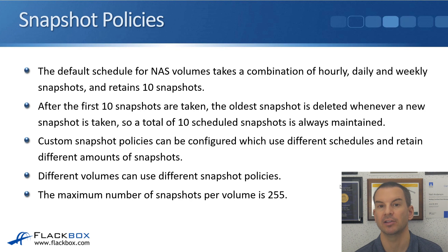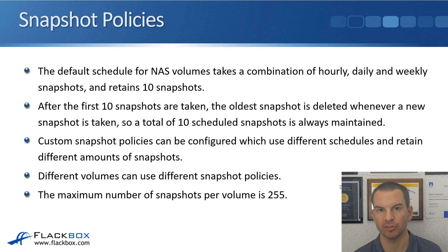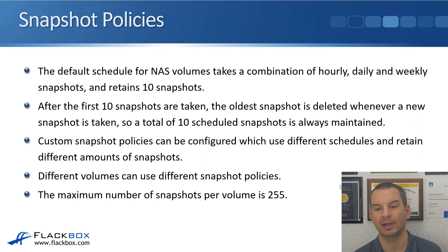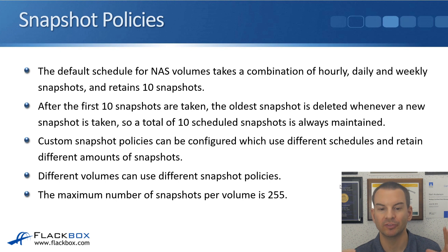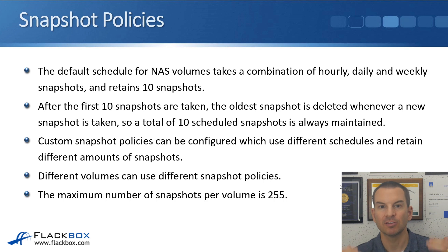The default schedule for NAS volumes takes a combination of hourly, daily, and weekly snapshots and retains 10 snapshots. After the first 10 snapshots are taken, the oldest snapshot is deleted whenever a new snapshot is taken. So a total of 10 scheduled snapshots is always maintained, always going back to the same amount of time. The amount of space that your snapshots are taking up should remain consistent over time.